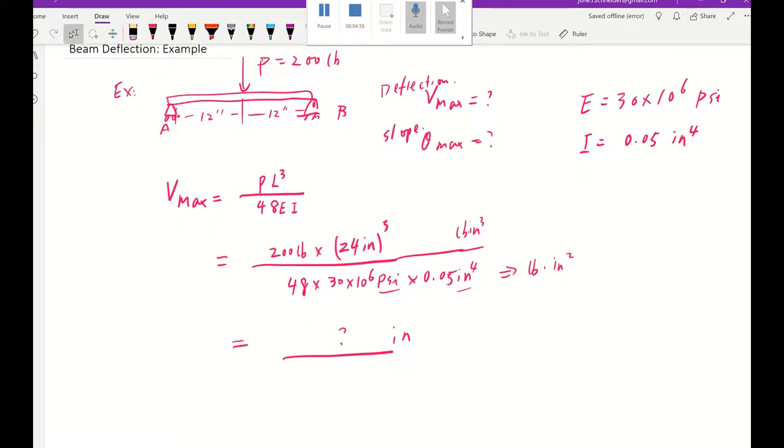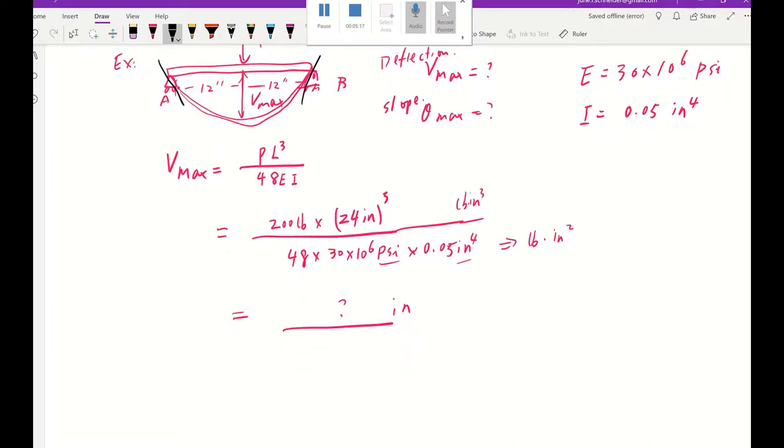Then you want to figure out what would be the maximum slope. So if this is deflected, it's going to look like this. This is the profile and here is maximum deflection. But where does the maximum slope occur? Maximum slope occurs at this left and right end. So in order to find the theta max, we're going to go back to that table.